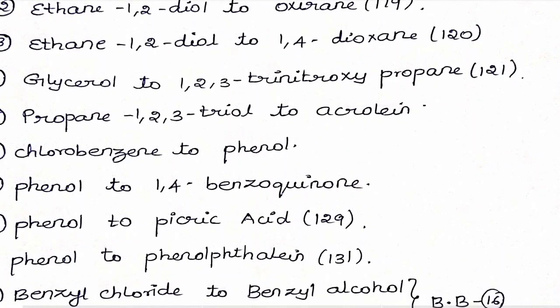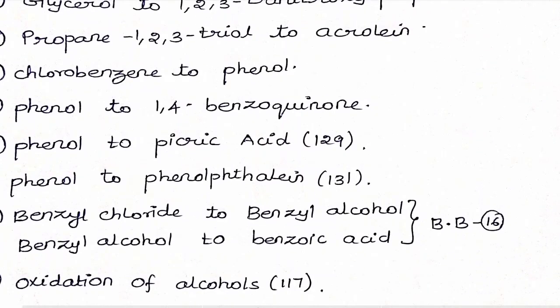Next, chlorobenzene to phenol — from the phenols topic. The seventh conversion is phenol to 1,4-benzoquinone on page 128. The eighth one is phenol to picric acid on page 129. The ninth one is phenol to phenolphthalein on page 131.